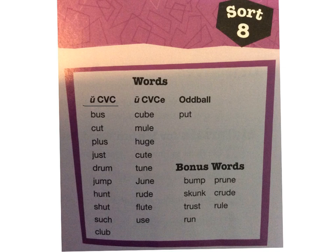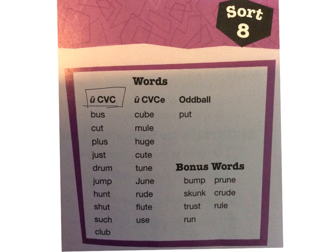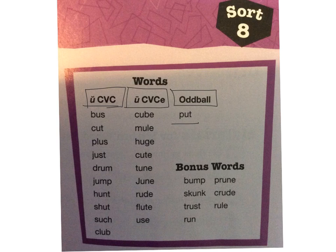Now what you're going to do is get out your planners and write your short U and long U words in your planners. First, write 'short U' and then consonant, vowel, consonant, and write all of your short U words below it. After you've done your short U words, do your long U pattern with your consonant, vowel, consonant, E words and write them below. And last but not least, write 'oddball' and write that one oddball word, 'put.'